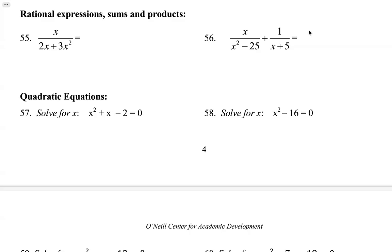In this video we're going to simplify rational expressions and solve some quadratic equations. A rational expression means the variable appears in the denominator. The numerator is a linear term and the denominator is a quadratic term. So a rational expression is basically a polynomial in the numerator and a polynomial in the denominator.